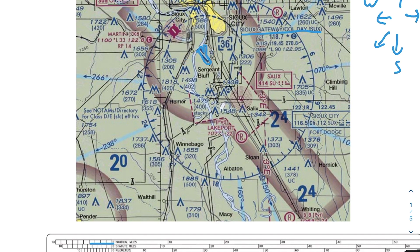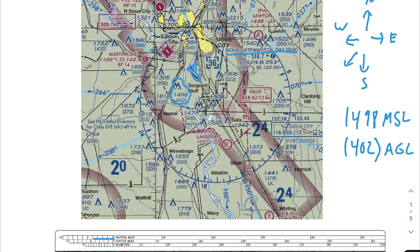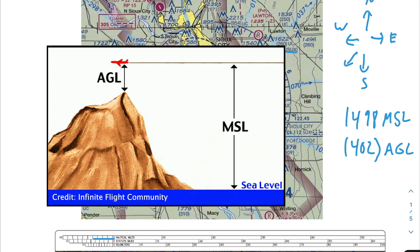We're talking about this tower here, and this is the label we have for our heights. Remember that when we see one number over another — 1498 and then in parentheses 402 — the number above is MSL and the number below is AGL. MSL stands for mean sea level, so that would be the height of the tower starting from sea level. AGL is above ground level. The MSL height is always going to be greater than or equal to the AGL height.